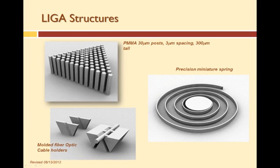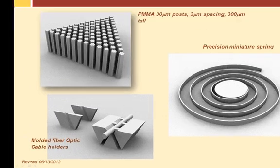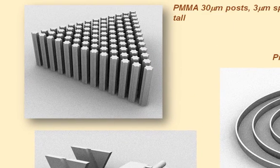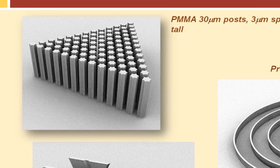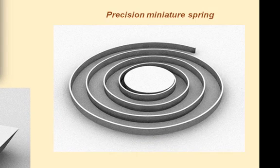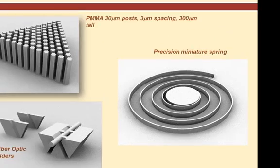This slide illustrates some examples of LIGA parts. Note the very high aspect ratios. LIGA can be used to build structures millimeters tall and a few micrometers wide, like the post in the upper graphic. It can also build parts that are a few microns tall and a few nanometers wide, like the coils of the spring.